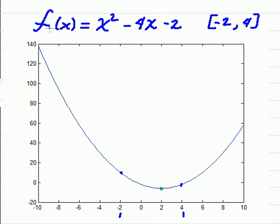In this problem, we're trying to find the minimum and the maximum. We're given f of x equal to x squared minus 4x minus 2 on the closed interval between negative 2 and 4.